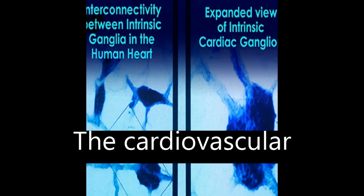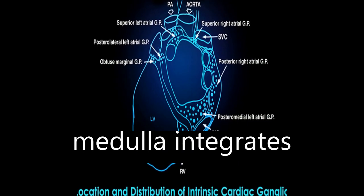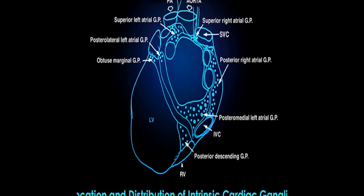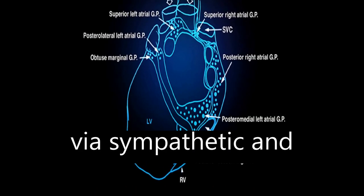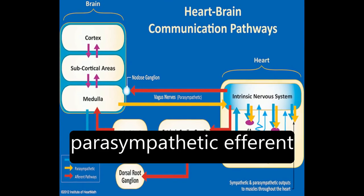The cardiovascular regulation center in the medulla integrates sensory information and input from higher brain centers to adjust heart rate and blood pressure via sympathetic and parasympathetic efferent pathways.